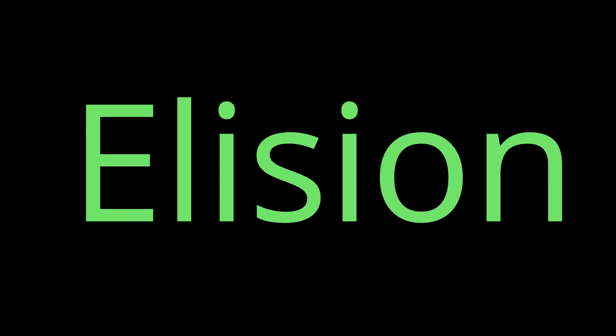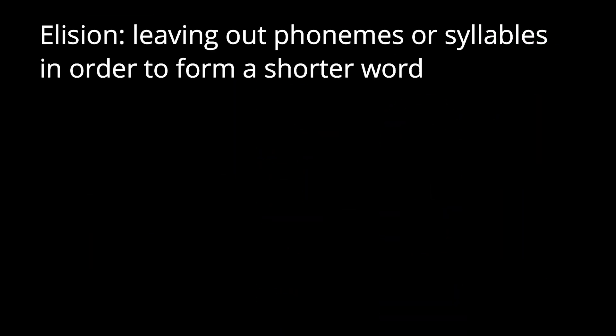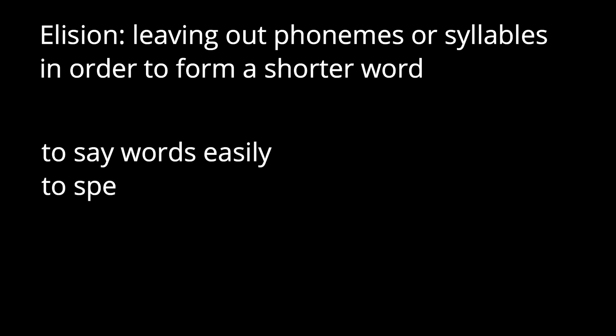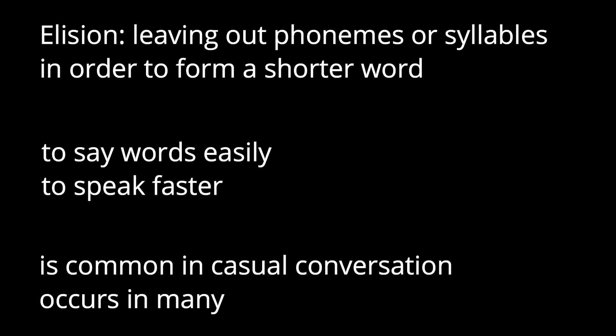Elision is the term for leaving out phonemes or syllables in order to form a shorter word. Elision is often used in poetry and music in order to keep the rhythm. In this situation, omitted sounds are replaced with an apostrophe. Elision makes words easier to say and makes speech faster. For this reason, elision is common in casual conversation. Elision can occur in many forms.